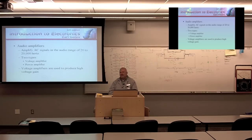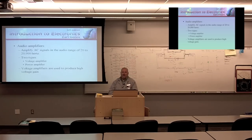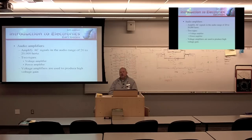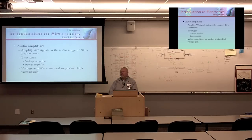The first amplifier type in this classification is the audio amplifier. The audio range — provided you have normal hearing — is 20 Hz to 20,000 Hz. That's normal human hearing. So obviously if you're going to have an audio amplifier, you want an amplifier that's capable of amplifying 20 to 20,000 Hz.